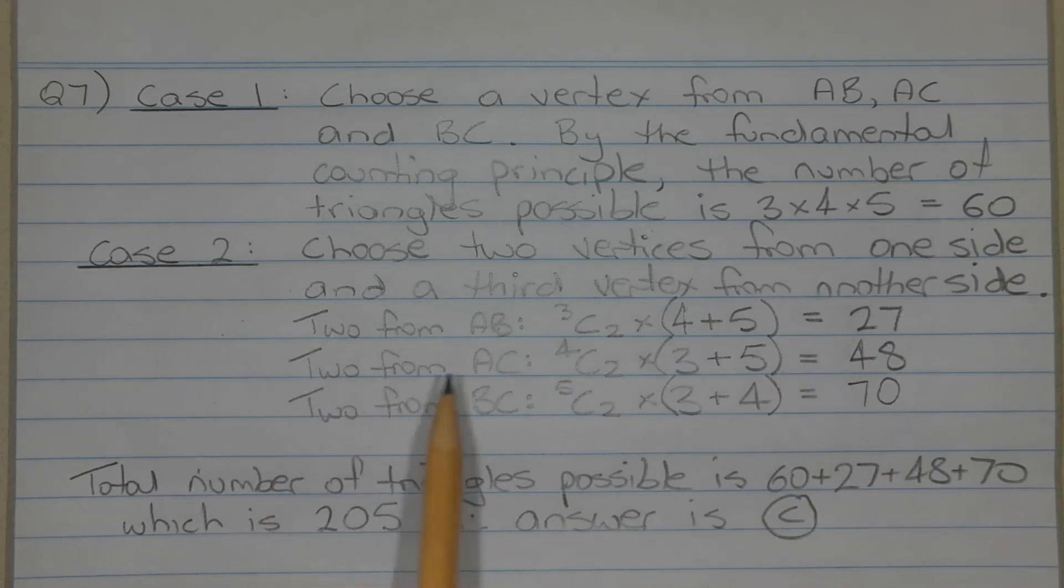Choosing two vertices from AC, we have 4 choose 2 times 3 plus 5 in brackets, which equals 48. And choosing two vertices from BC, we have 5 choose 2 times 3 plus 4 in brackets, which equals 70.